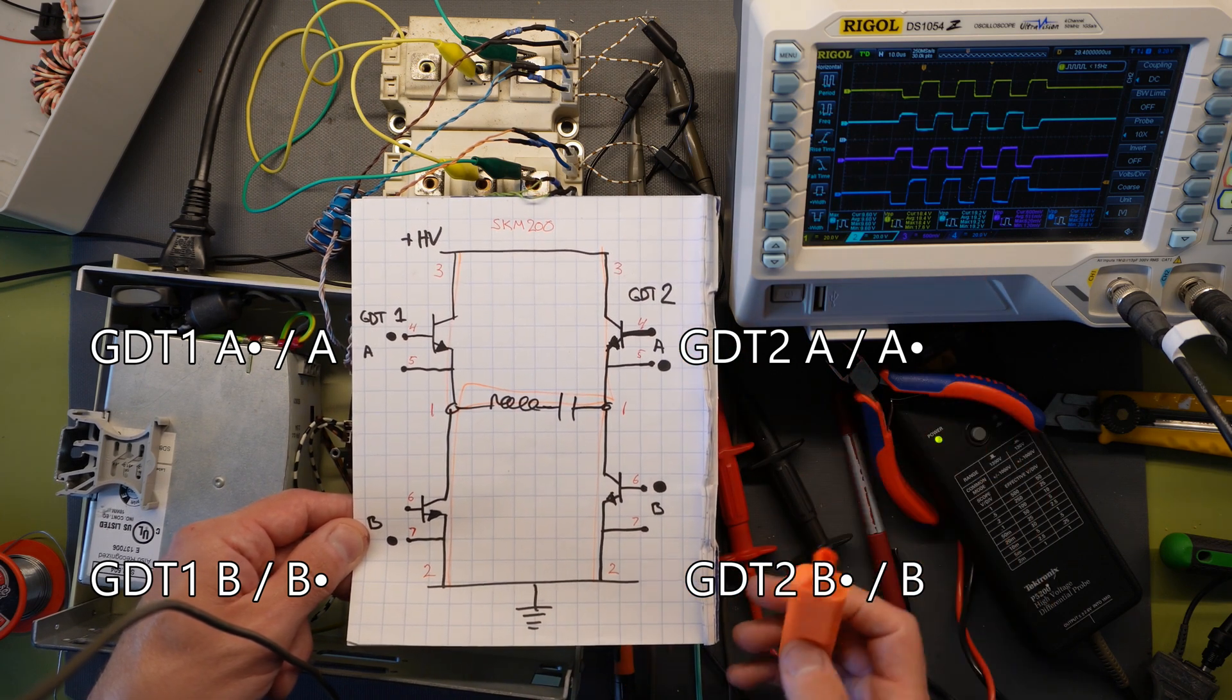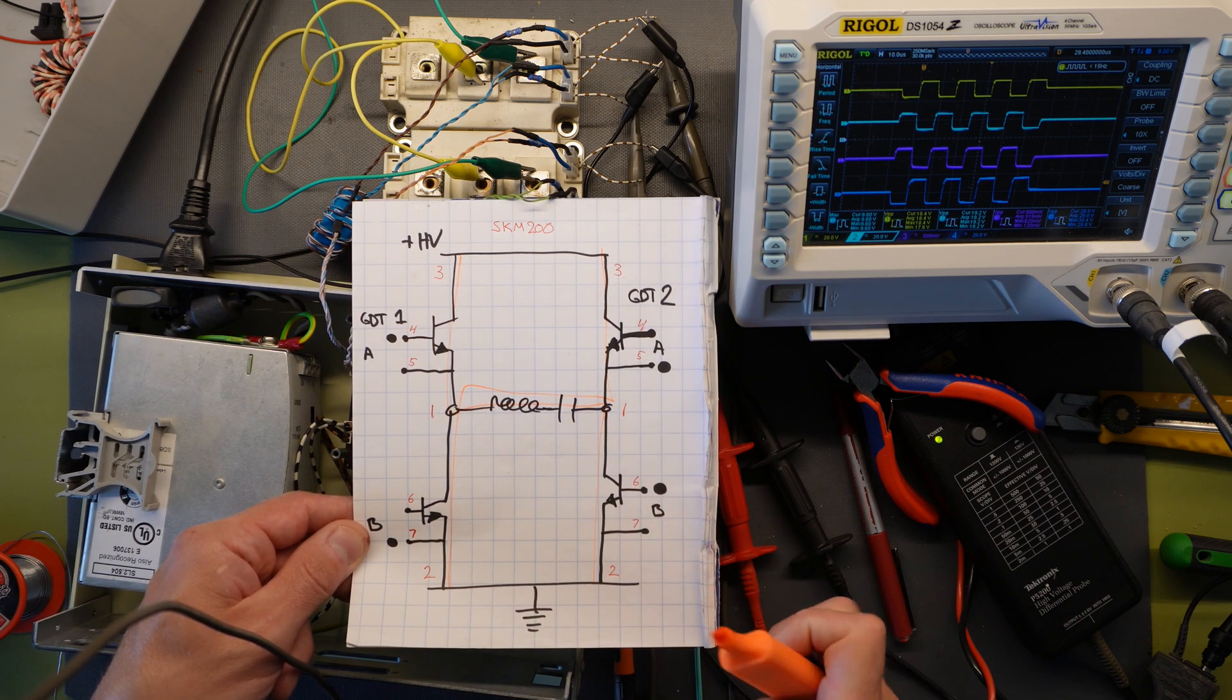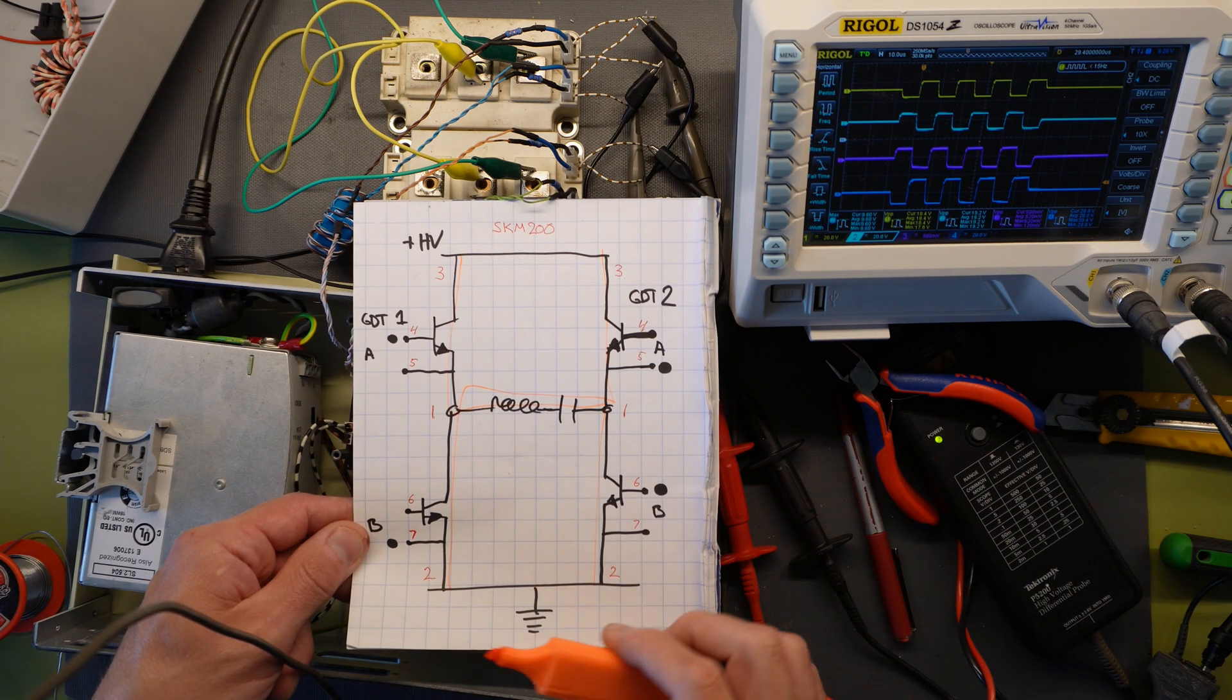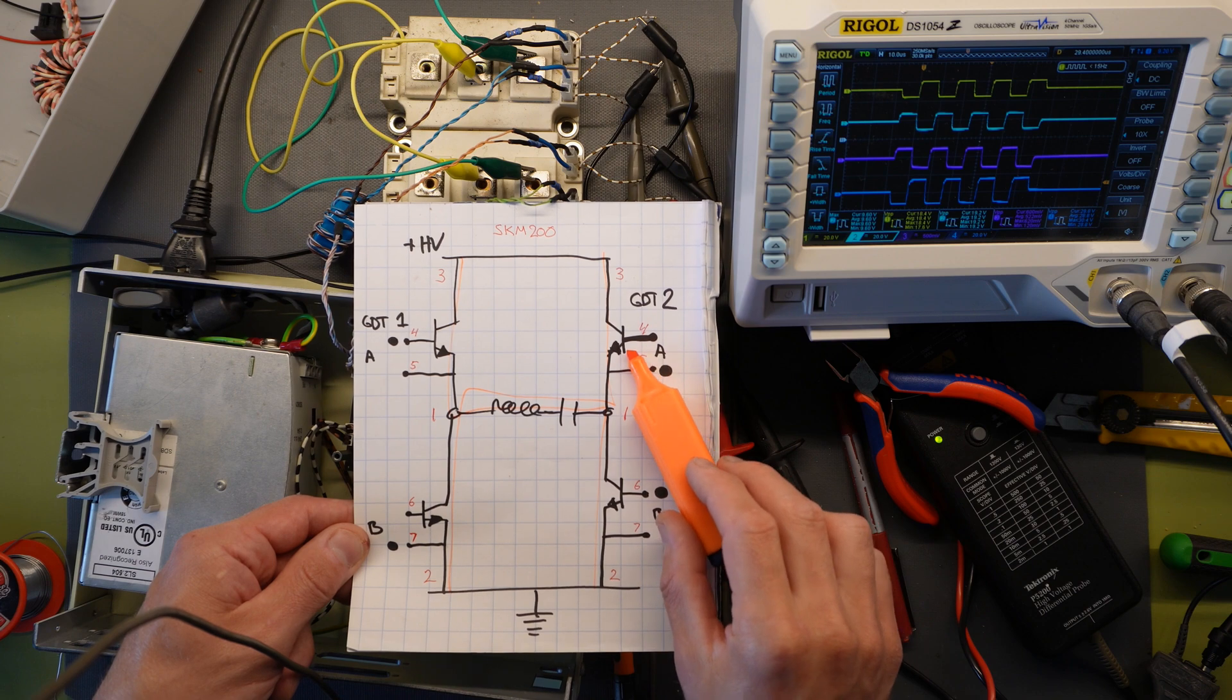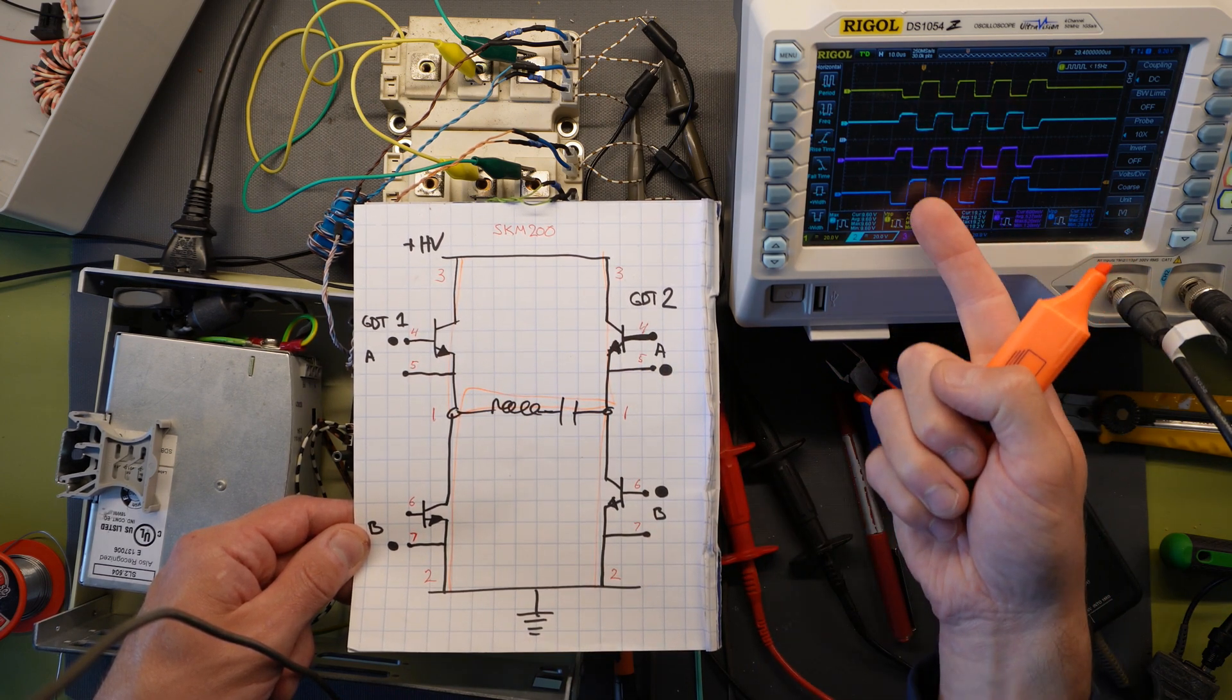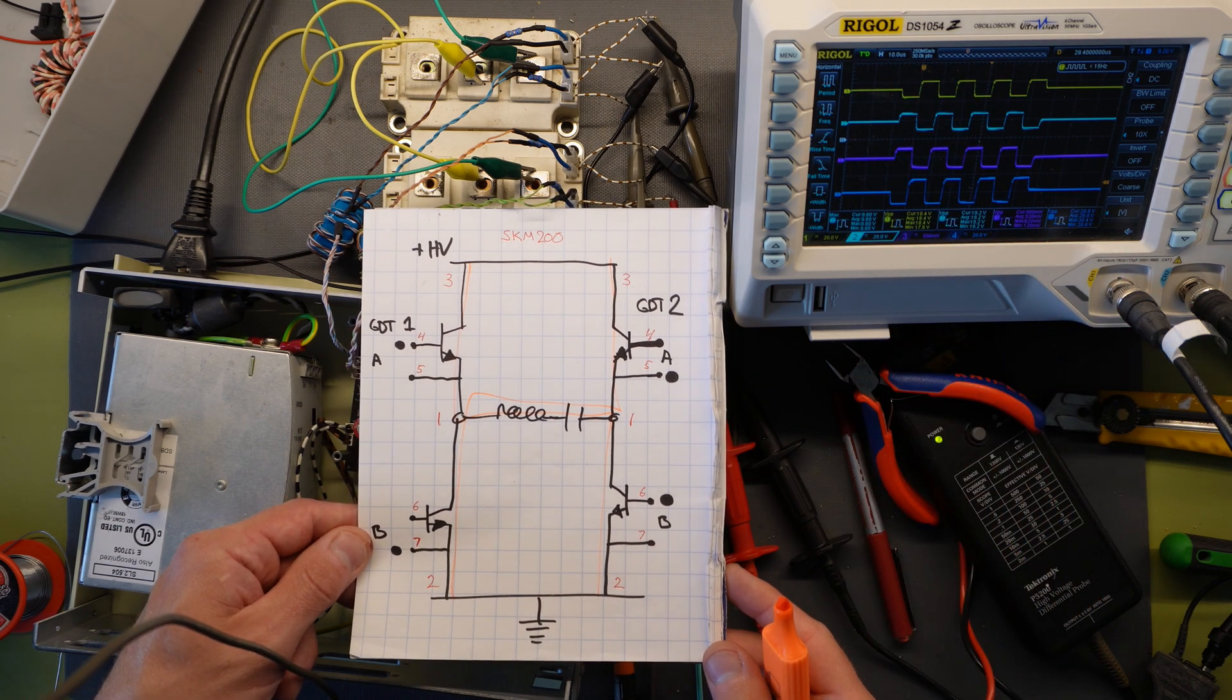So let's check our signals again. Channel 1 and 4 will have to be identical. Yellow, blue, yes they are identical. Channel 2 and 3 identical and will have to be opposite of 1 and 4. Channel 2 and 3 is identical and they are opposite of 1 and 4. So facing on our GDT is correct.